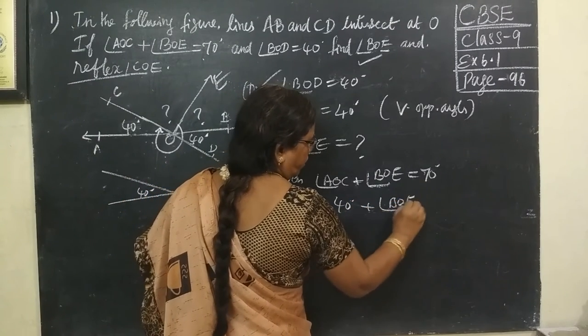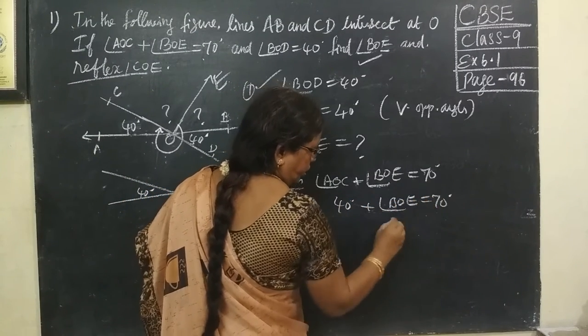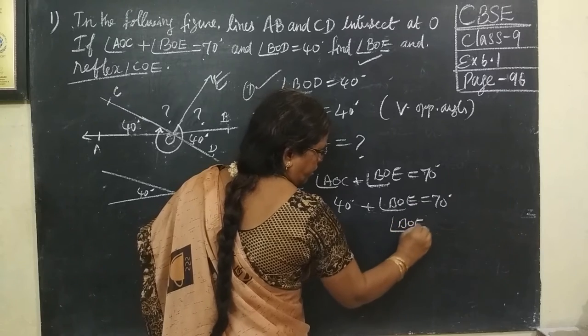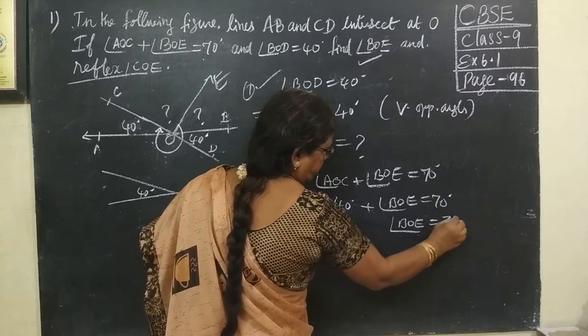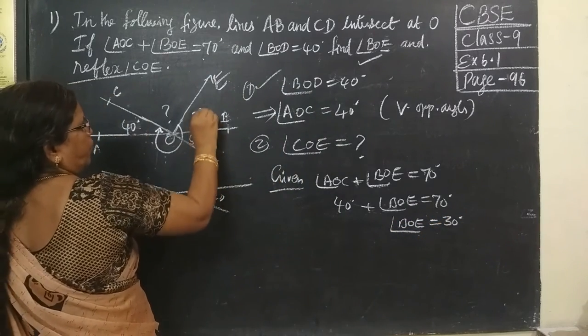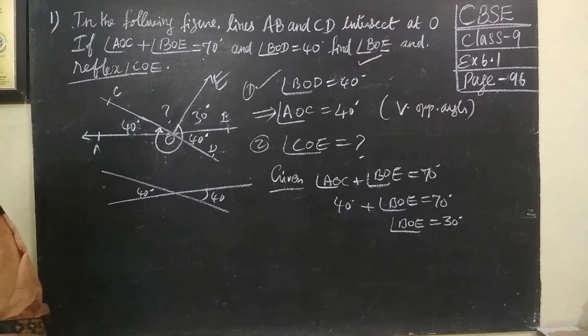So, BOE equal to 70. So, this implies BOE equal to 30 degrees. So, now you know BOE equal to 30 degrees.